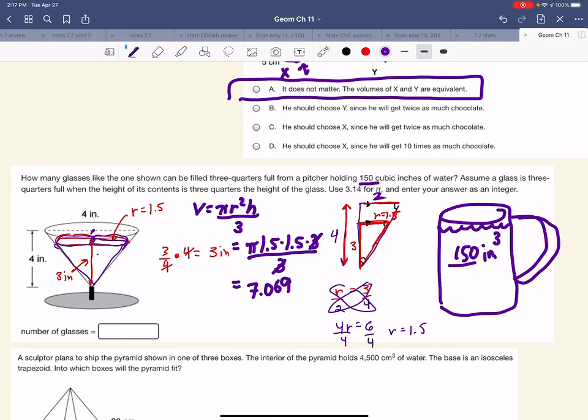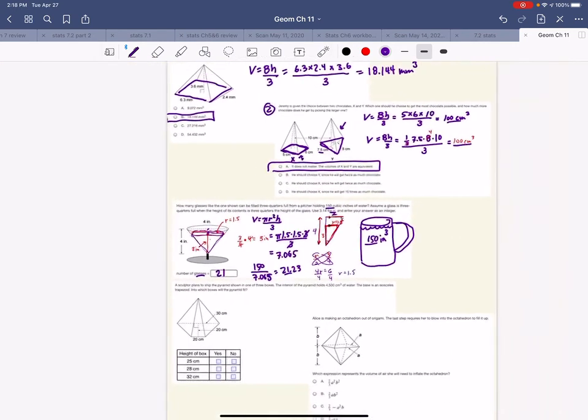Okay. Now we want to know how many of those do we get. So we do 150 divided by that number. Oh, and I wanted to use 3.14 like they asked. Okay, so squared divided by 7.065. They said don't use the pi button, use that. So 7.065. Okay, so how many times would 150 go into 7.065? I get 21.23. So I can only fill up 21 glasses.